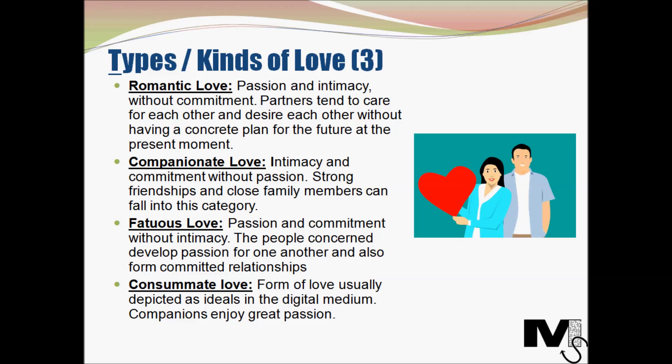The next type is consummate love — this is the perfect, ideal form of love that has all three components. It is the type usually depicted as ideal in various media. In reality, very few people can experience this form of love for long periods. Most successful relationships will experience consummate love in phases and slip into other forms from time to time. In such relationships, partners enjoy great passion for years and the happiness of each individual is tied to the happiness of their partner.